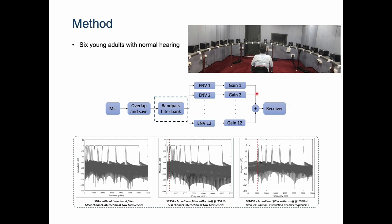Based on the experimental condition, the bandpass filter bank was replaced by three variations of broadband filters: SF0, SF300, and SF1000.